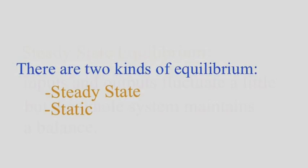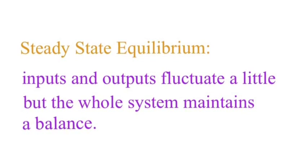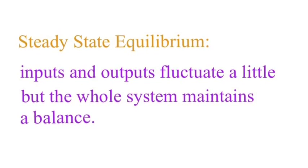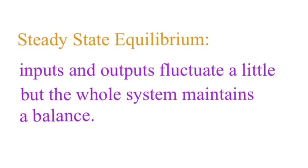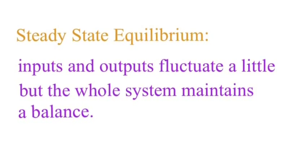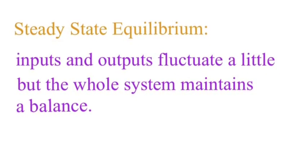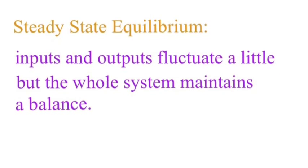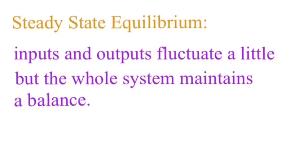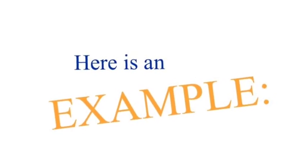There are two types of equilibrium: steady state and static. With steady state equilibrium, the inputs and the outputs of the system might fluctuate a little bit, but the whole system maintains a balance. So the whole system stays constant, but there are little changes in and out.